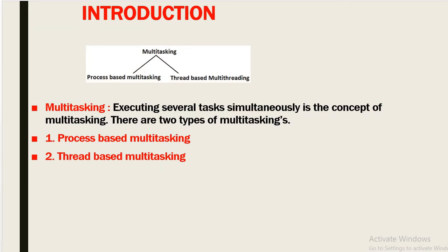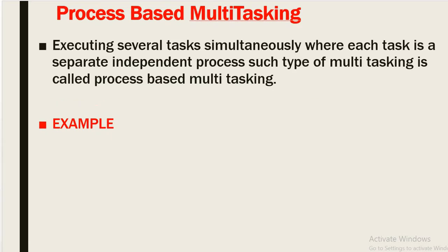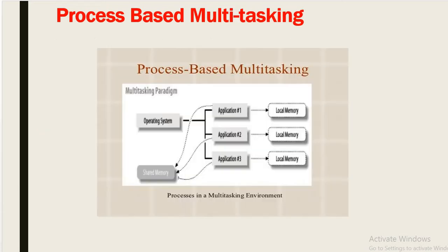First we will discuss what is multi-tasking. Executing several tasks simultaneously is the concept of multi-tasking. There are two types of multi-tasking: one is process-based multi-tasking and the second is thread-based multi-tasking. Process-based multi-tasking is executing several tasks simultaneously where each task is a separate independent process.